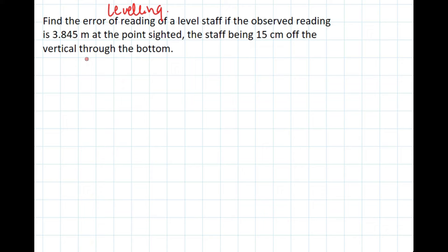So if the staff is vertical, and this is the line of sight, if the staff was vertical, the true value would be this. But the staff is not vertical.